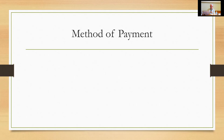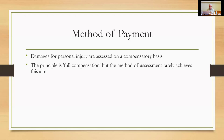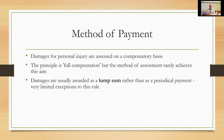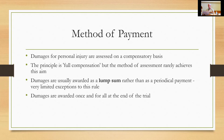That's the structural background. Turning to some general rules — much of this will be similar to English law. Damages for personal injury are assessed on a compensatory basis and the principle is full compensation, but as we'll see, the method of assessment rarely achieves this aim. A famous judge said the only thing we can be sure about is that the final assessment will be inaccurate. Damages are usually assessed as a lump sum rather than as a periodical payment, and in Australia there are very limited exceptions — essentially it's a lump sum system, awarded once and for all at the end of trial.